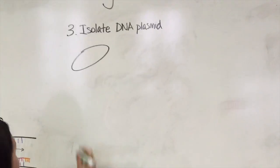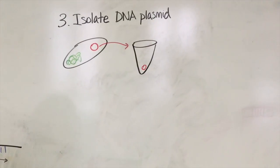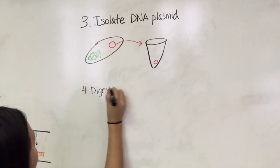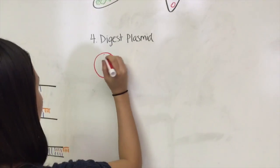Third is to isolate DNA plasmid from bacteria via mini, midi, or maxi prep. Ensure that the plasmid has a selectable marker such as ampicillin resistance. The fourth step is to digest the plasmid with restriction enzymes.